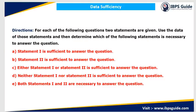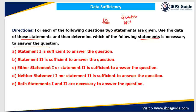First, let us discuss the direction of the question. The direction is: for each of the following questions, two statements are given. Use the data of these two statements and determine which of the following statements is necessary to answer the question. In a data sufficiency question, there is basically a question followed by two statements — statement number 1 and statement number 2. We have to answer the question using either statement 1, statement 2, or a combination of both, and accordingly choose the option.